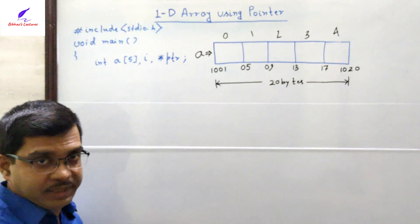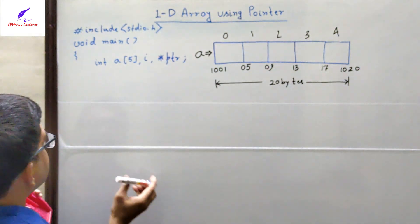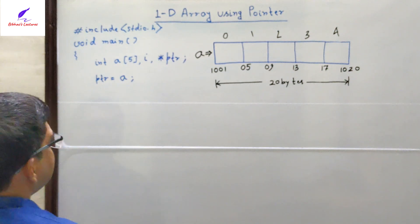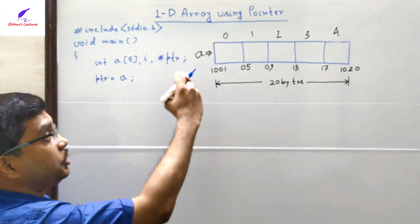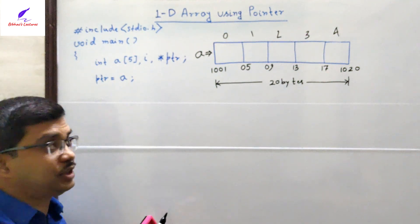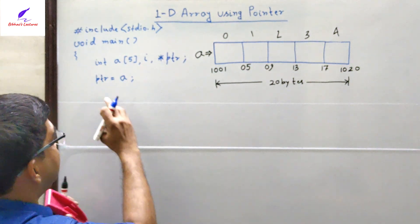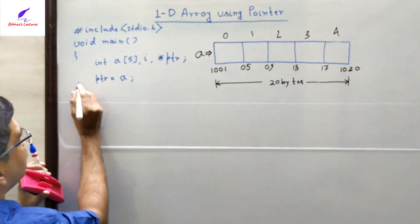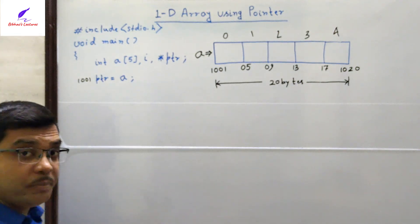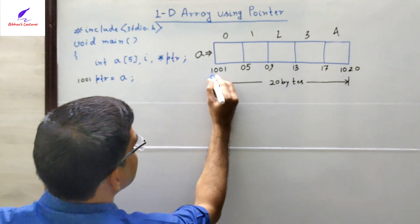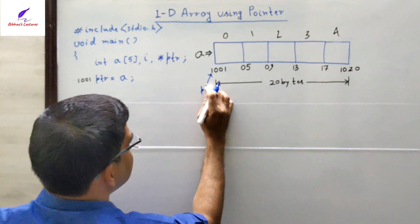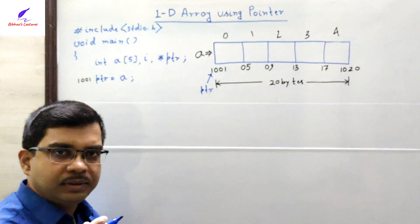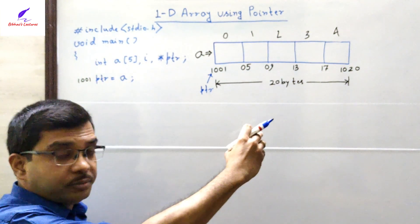We have declared the pointer PTR as an integer pointer, so it can point to an integer. We write PTR = a. Here 'a' is the name of the array, and mentioning the array name gives its base address. So PTR = a means PTR stores the base address, which is 1001. That means PTR is now pointing to location 1001 — the starting address of the array.